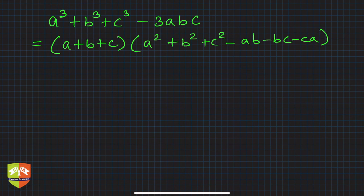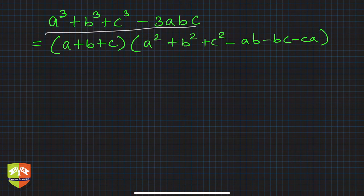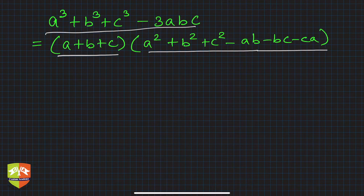Welcome again friends. We are discussing factorization techniques for algebraic expressions. In this session we are going to understand that if there is an expression given in the form a cube plus b cube plus c cube minus 3abc, then you can factorize it as a plus b plus c times a square plus b square plus c square minus ab minus bc minus ca. We understood the proof for this in the identities chapter; now we are going to implement it.